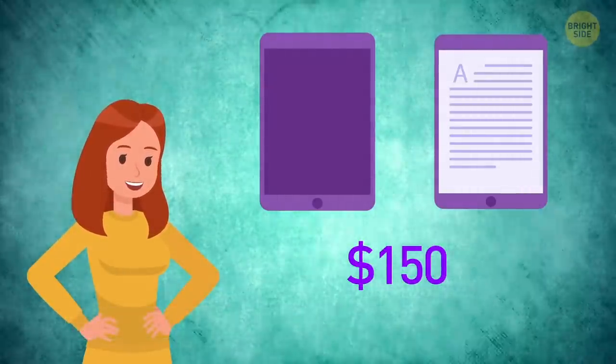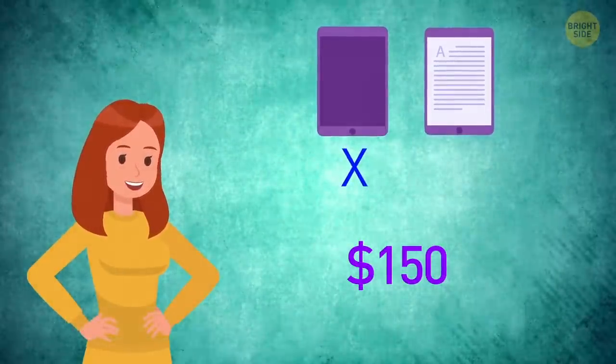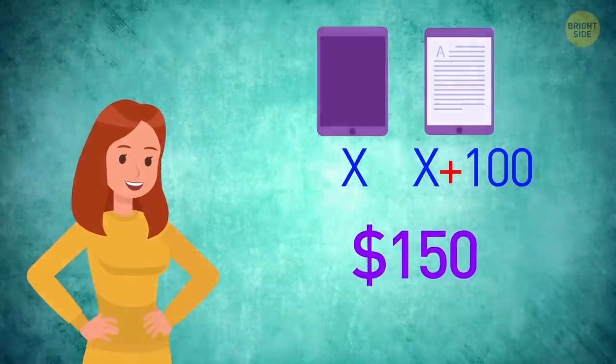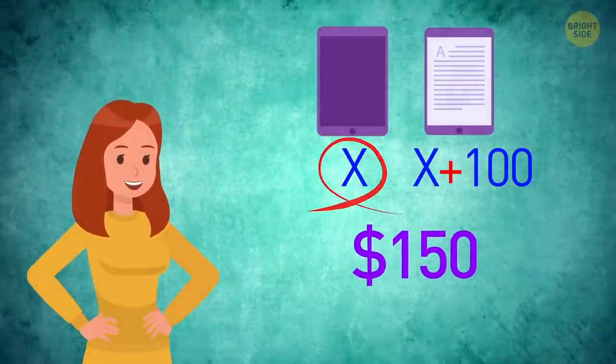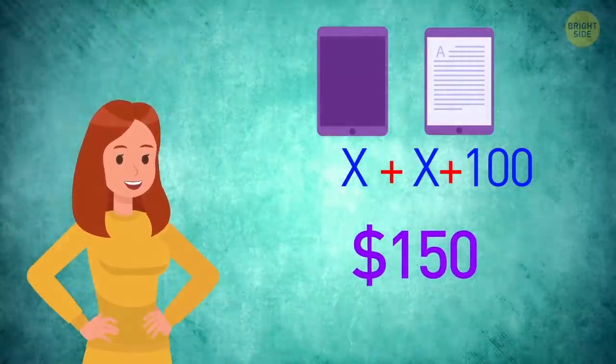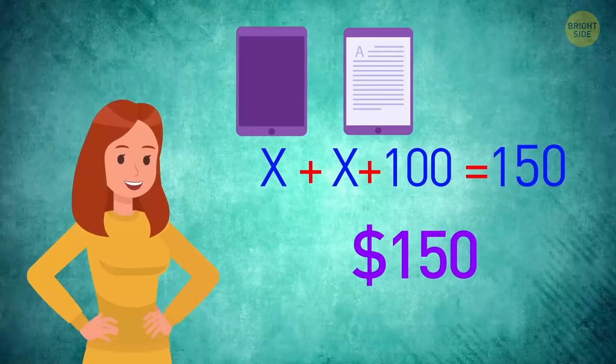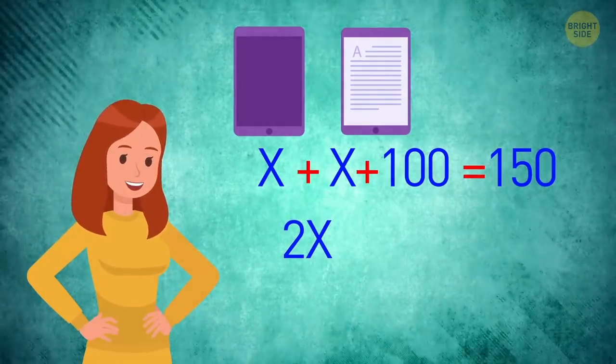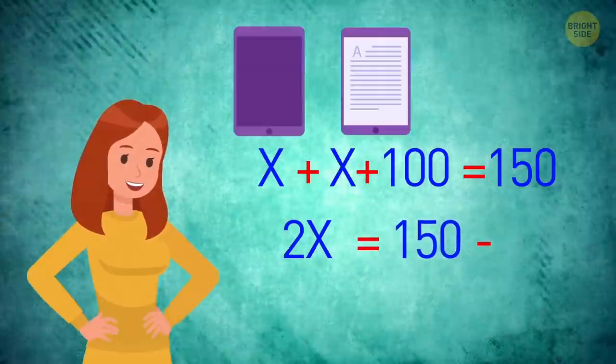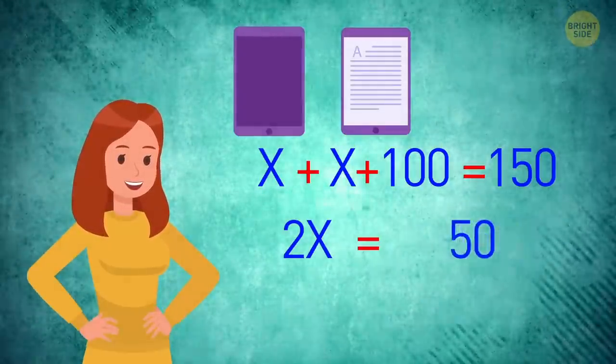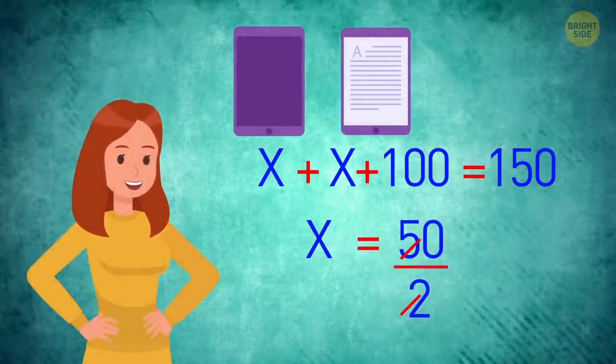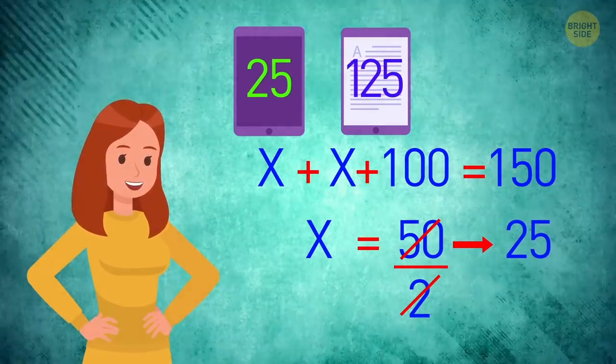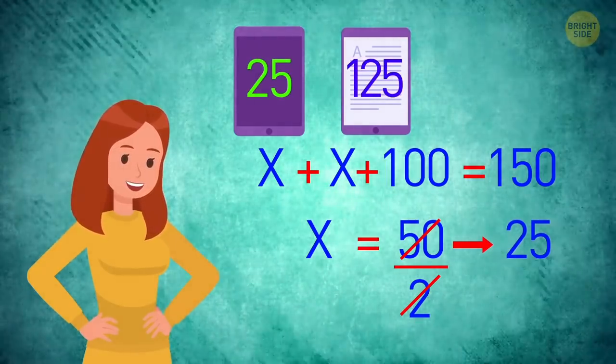Alright, let's say the case cost X. Then, the e-book cost X plus 100. Together, they cost $150. So, X, the case, plus X plus 100, the e-book, are equal to $150. Now, solve the equation. 2X is equal to 150 minus 100, or 50. So, 1X is equal to 25. So, the case cost $25, and the e-book cost $125. Well, that adds up.